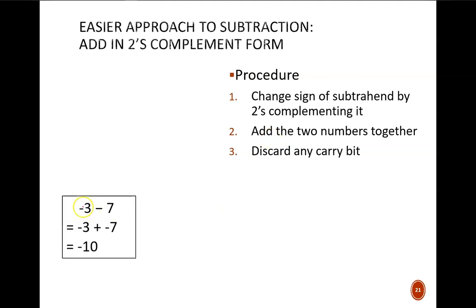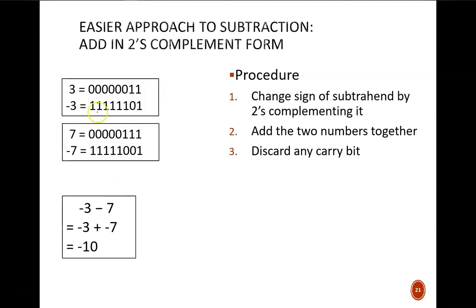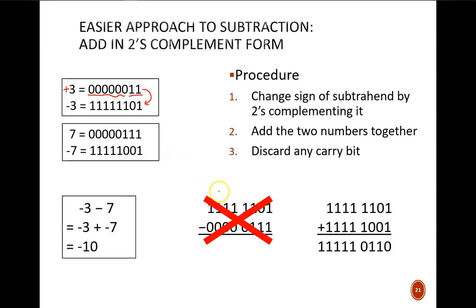Let's look at the example of decimal negative 3 minus 7 performed in binary. Instead of that subtraction, we'll perform it as negative 3 plus negative 7. The first step is to convert those decimal numbers into binary, specifically 2's complement form. To get negative 3, write the value for positive 3 in unsigned binary, which is 1,1, then pad with leading zeros out to 8 bits. Now apply the 2's complement operation to leave us with negative 3. The same process is done to obtain negative 7 in 2's complement form. Now we can simply add the two numbers together.